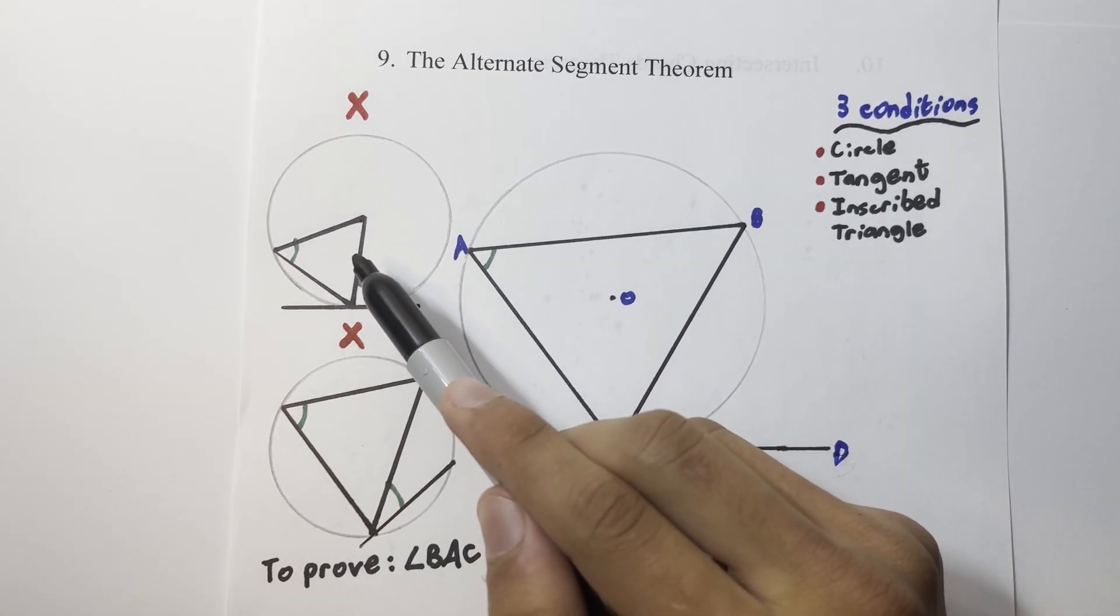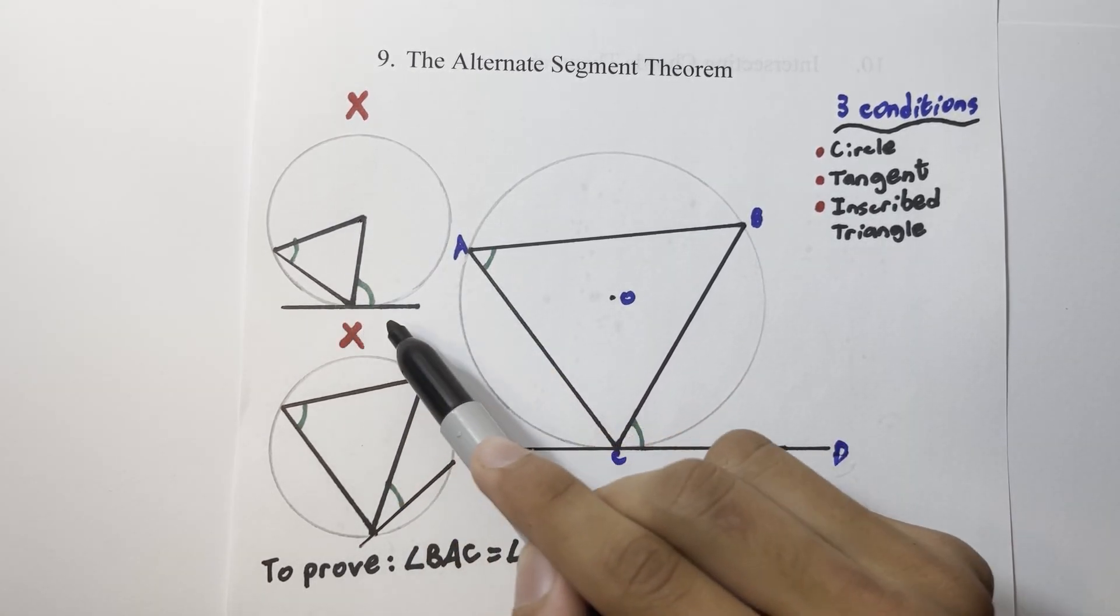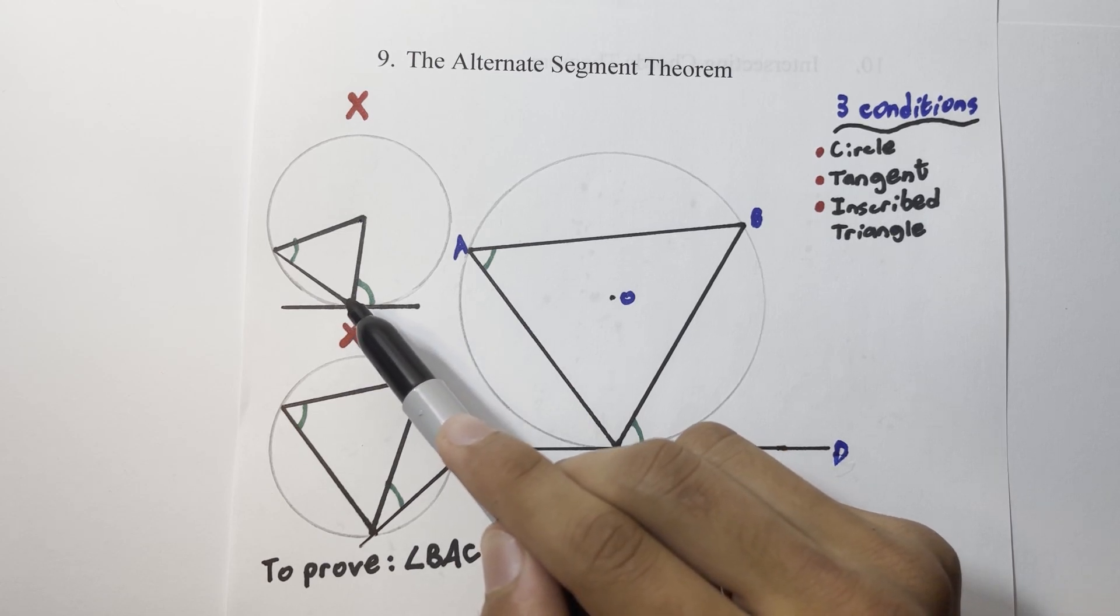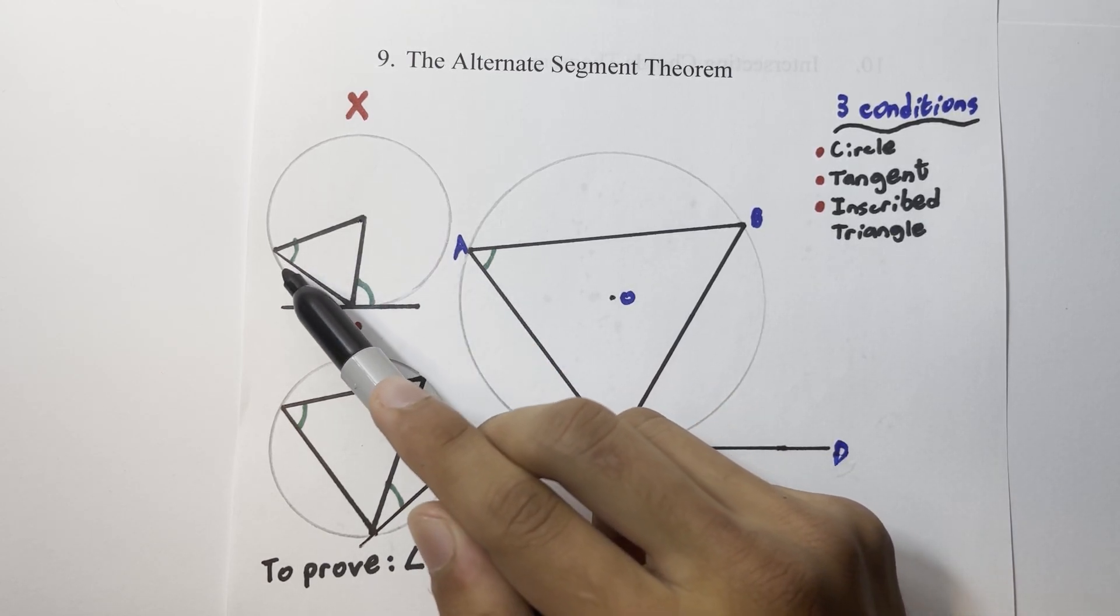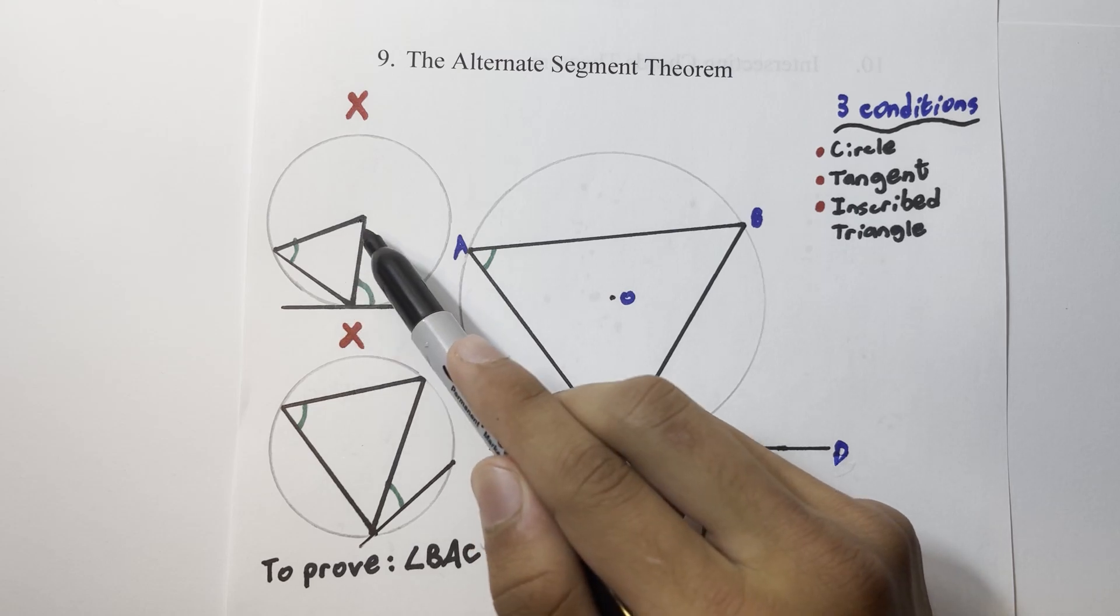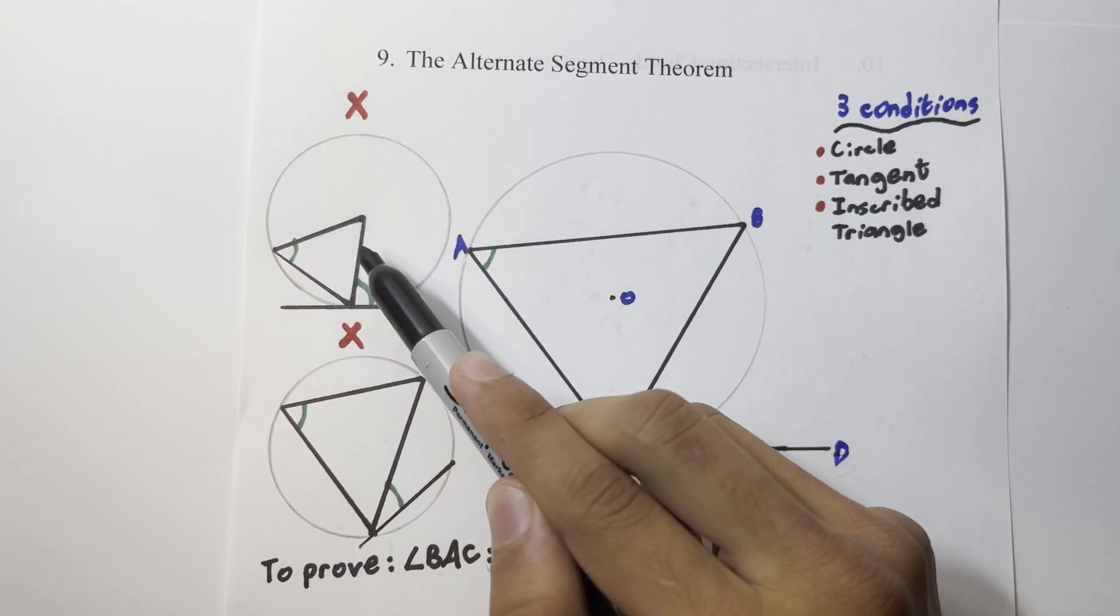We can see that in the first example on the left, there is a circle, there is a tangent to that circle, however the triangle isn't inscribed. Only two of the vertices of the triangle are located on the circumference, and the third is located on the center point, so this does not follow the Alternate Segment Theorem.